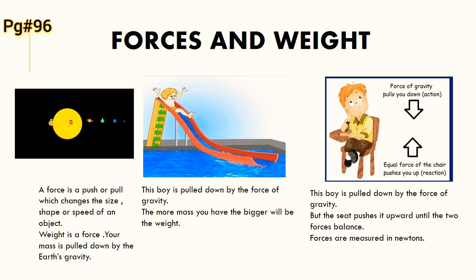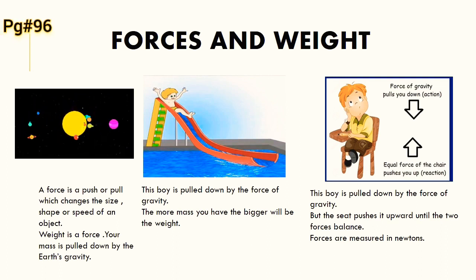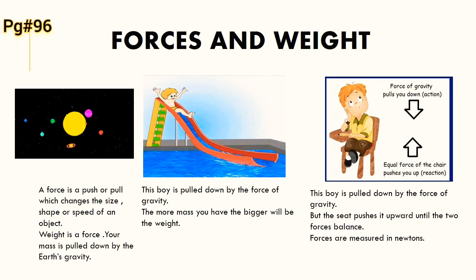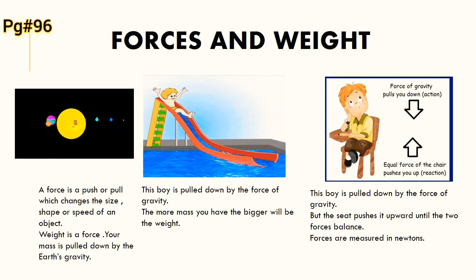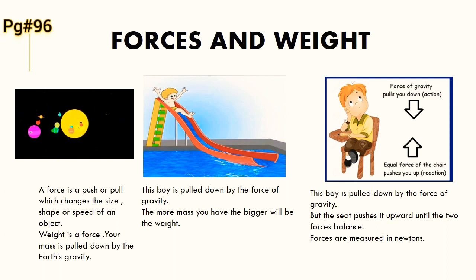In the third picture, the boy is sitting on a chair. His gravitational force or weight is pulling him downward, but the seat is pushing him upward until the two forces are balanced. Both force arrows show that they act in opposite directions.